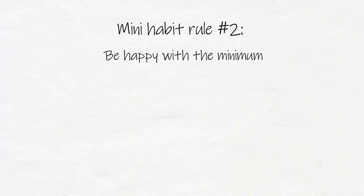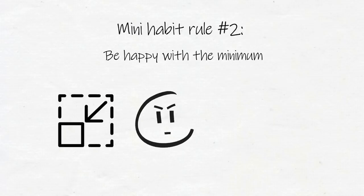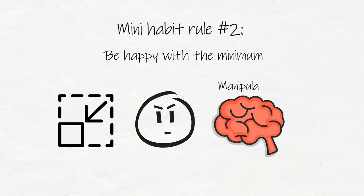If I intend to do the minimum, but then get angry at myself for only doing the minimum, there's a part of my brain that knows that I'm trying to manipulate myself, and it won't fall for the trick, and it will resist building the habit.